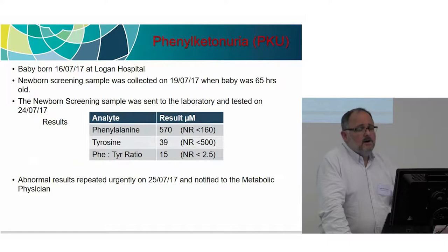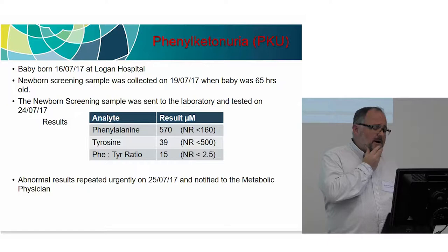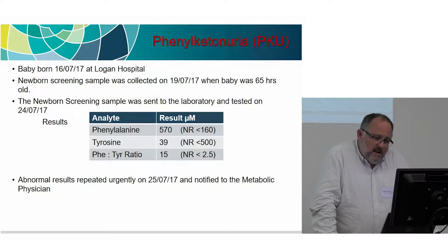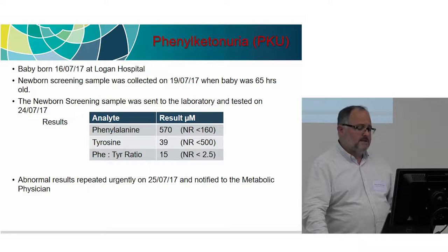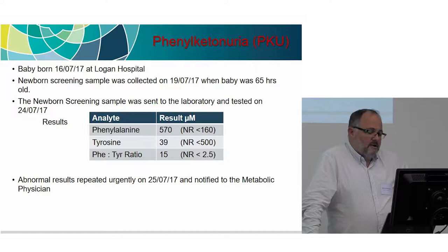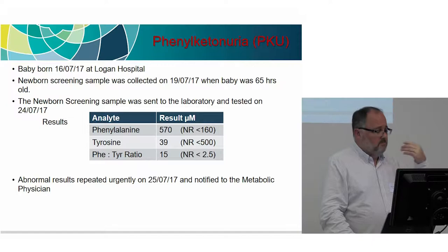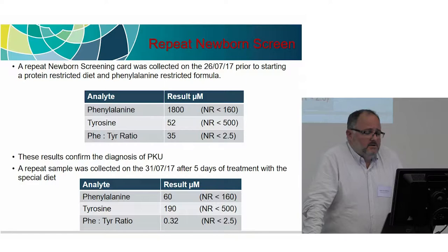I want to quickly touch on PKU just to show you the advantages. This is a baby born at Logan Hospital — about 15 to 20 kilometres south of Brisbane — born in the middle of September this year. Had a newborn screening card at roughly three days old. We looked at it: the phenylalanine was 570, tyrosine was 39, the phenylalanine-to-tyrosine ratio was 15, indicating the patient may have phenylketonuria. We contacted the physician, requested an urgent repeat sample, got the same result, and confirmed the patient had PKU.